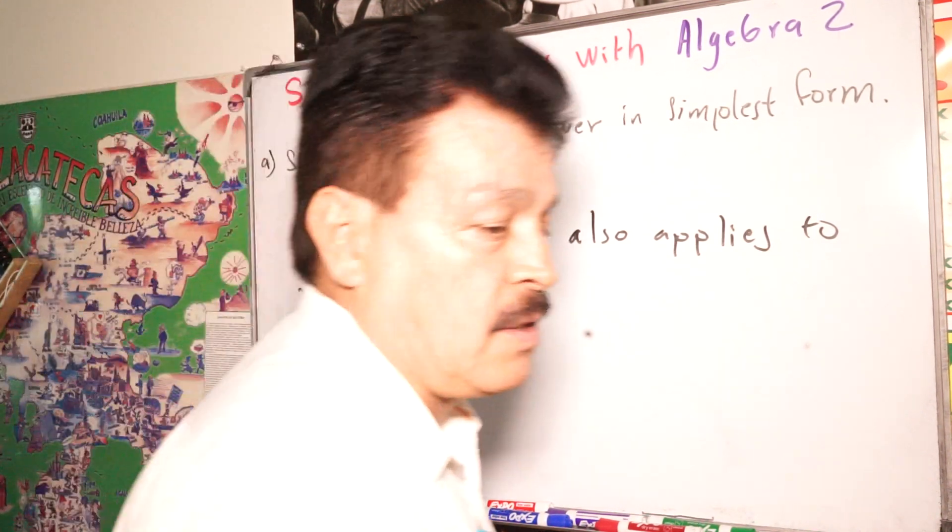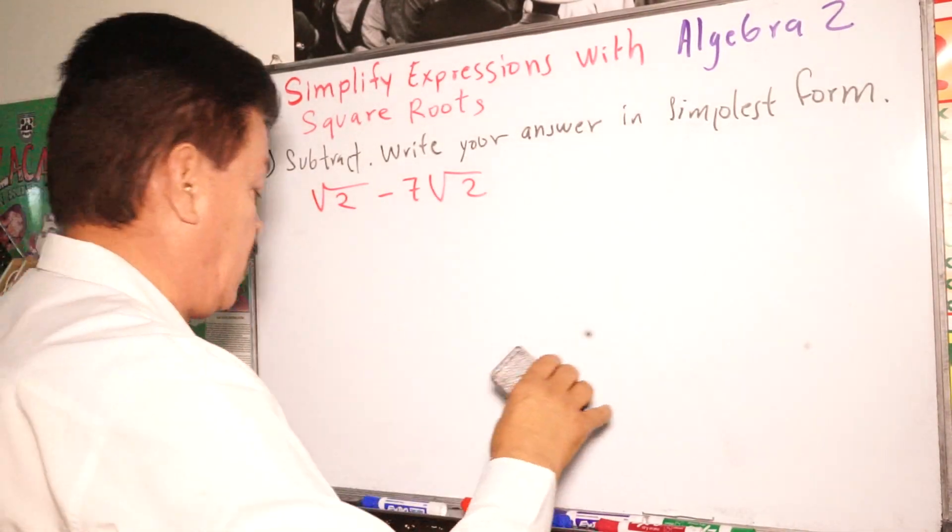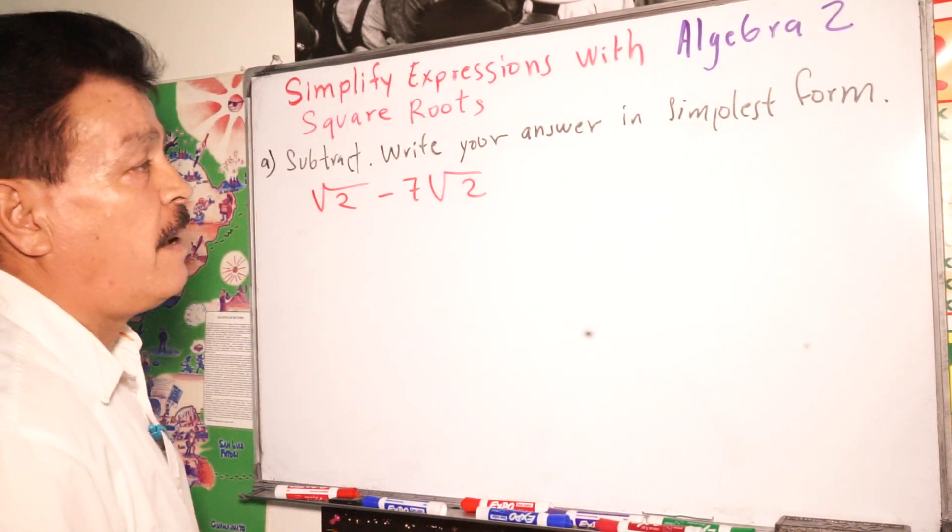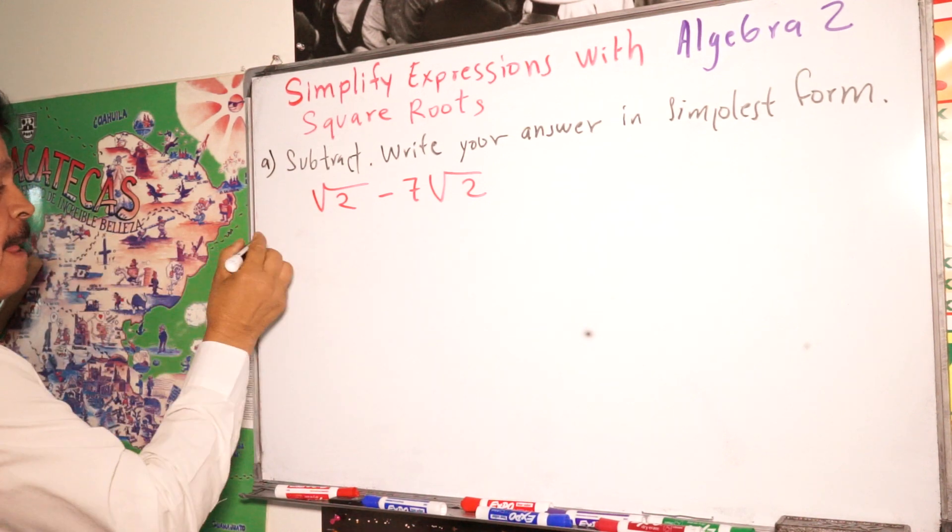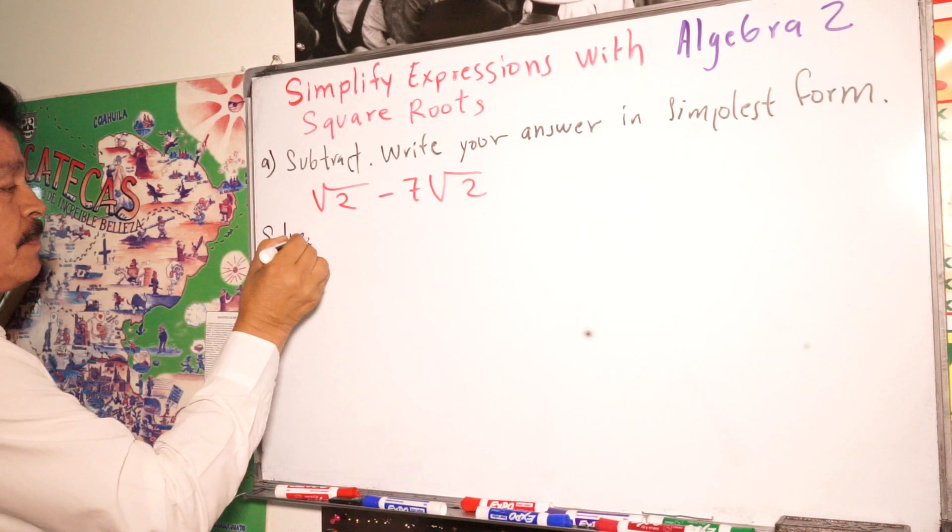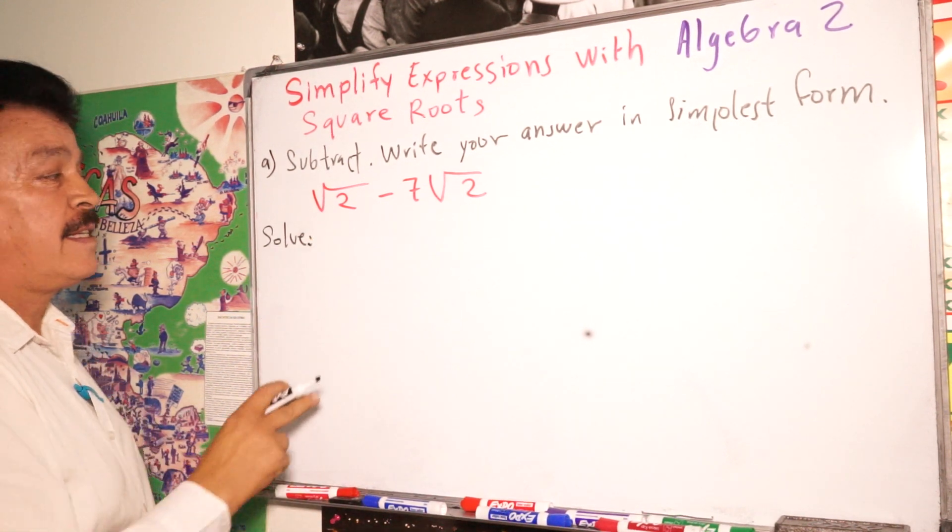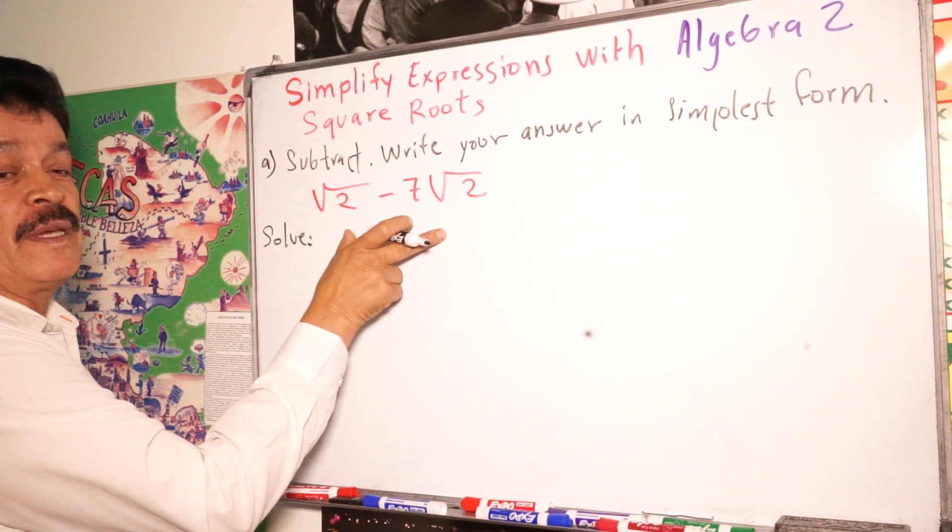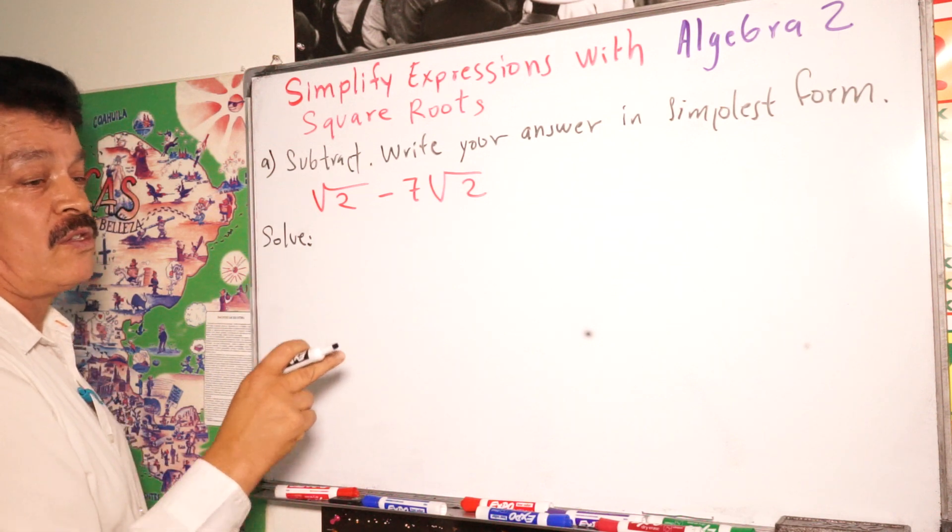To solve this problem it's very simple. Our class for today we will solve a couple of problems. In this case, we have a problem here. Since the expression has like terms, like terms can be simplified using the distributive property.